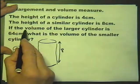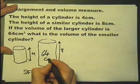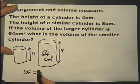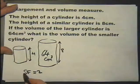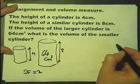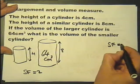The question continues: if the volume of the larger cylinder is 64 cubic centimetres, what is the volume of the smaller cylinder? We've worked out the scale factor, the linear scale factor, by using these two dimensions. The question talks about volume, so we need to know the volume factor.